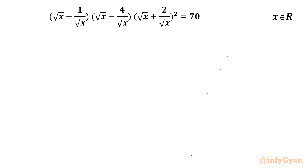First, let's write the domain of the equation. The denominator cannot be 0, so x cannot be 0. Since a square root is involved, x must be positive for real solutions. Taking the intersection of both conditions, we conclude x must be positive.